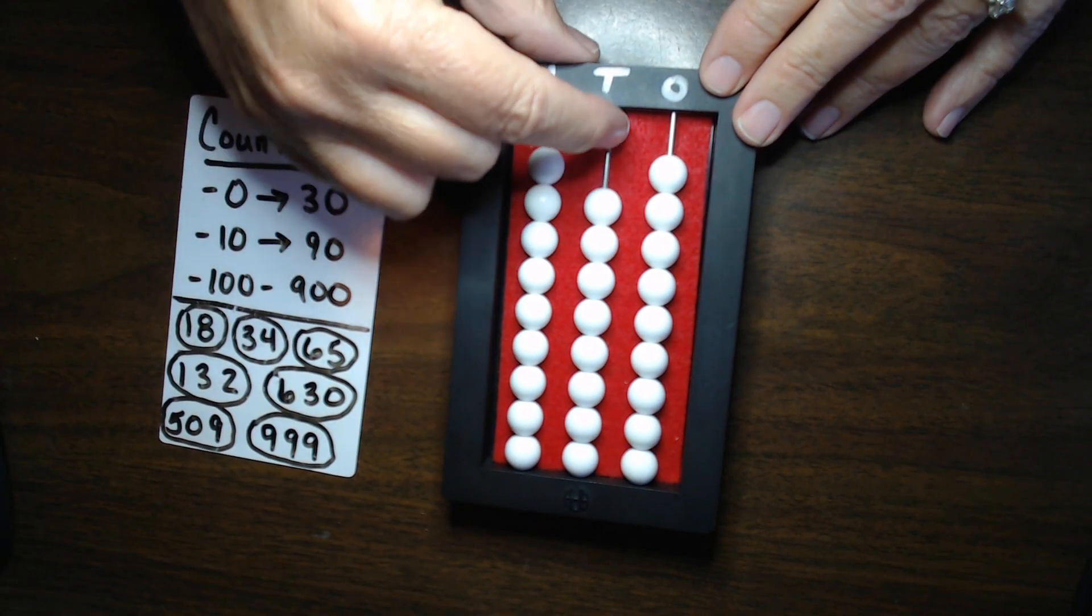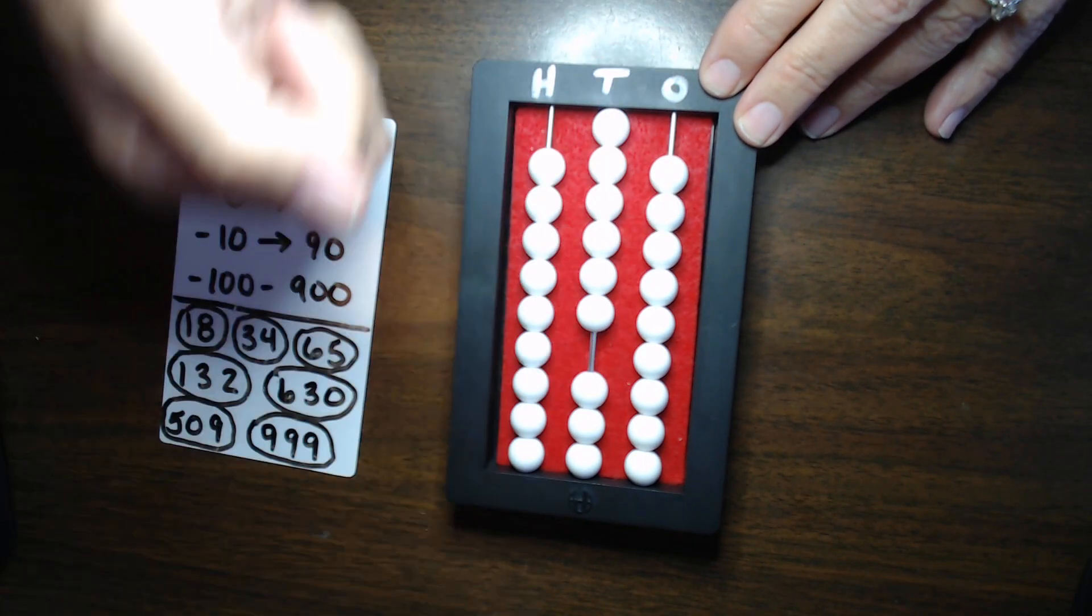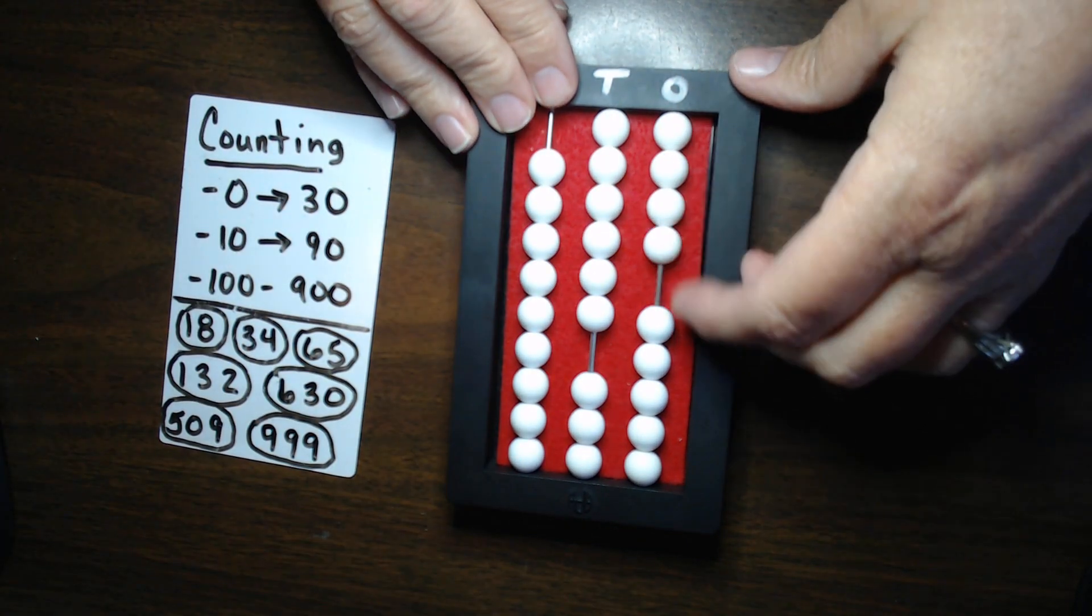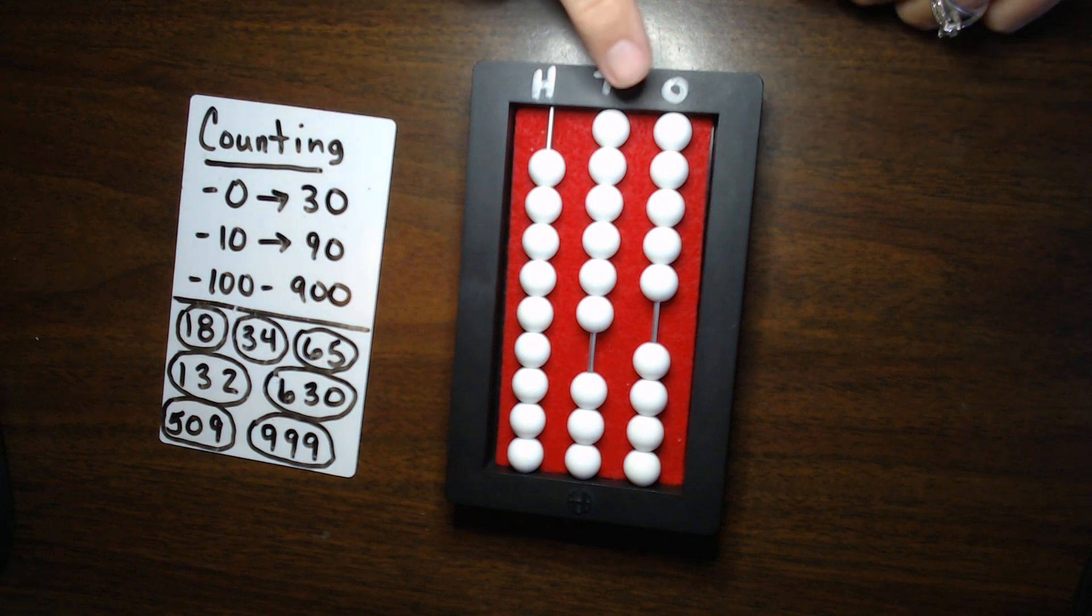65. 10, 20, 30, 40, 50, 60. 1, 2, 3, 4, 5. So, this is the number 65.